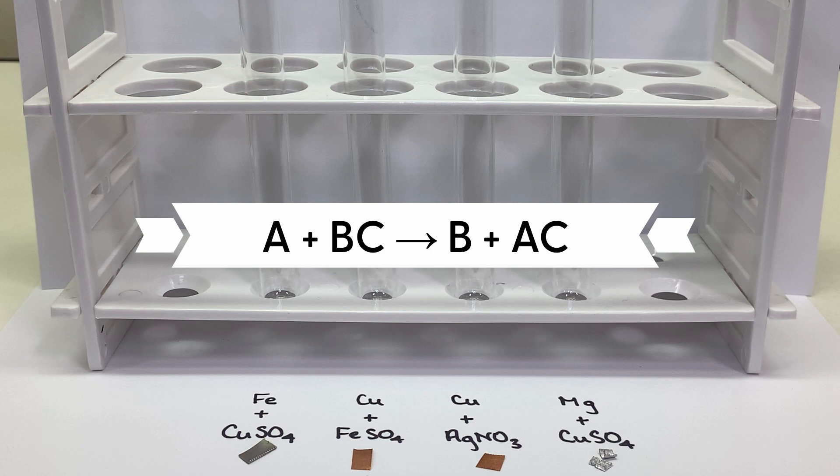In this equation, A represents a more reactive element and BC represents the original compound. During the reaction A will replace B forming the product compound AC and releasing the less reactive element B.